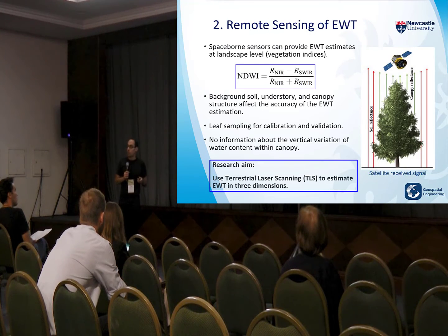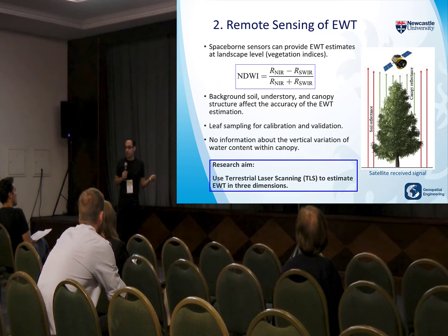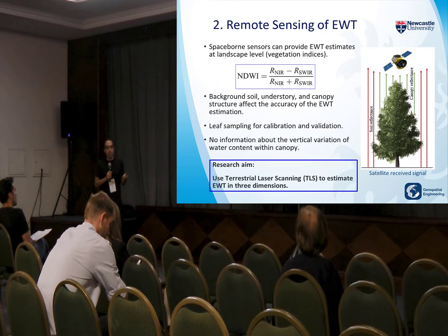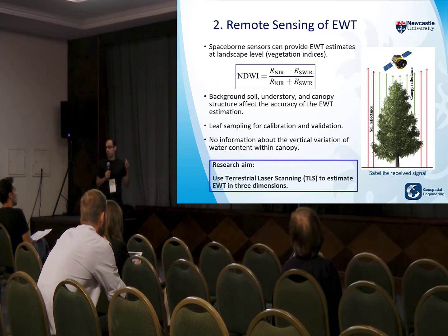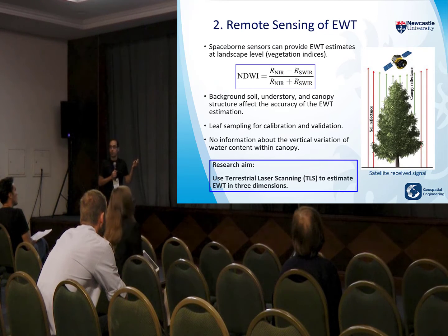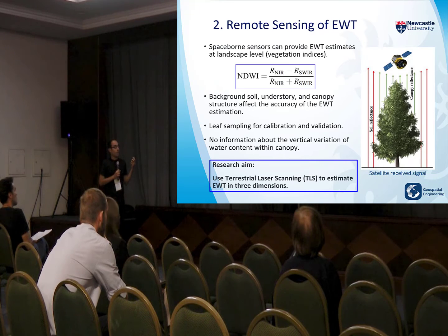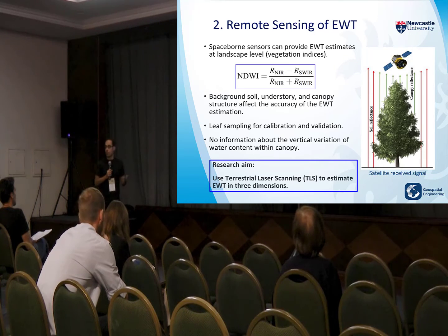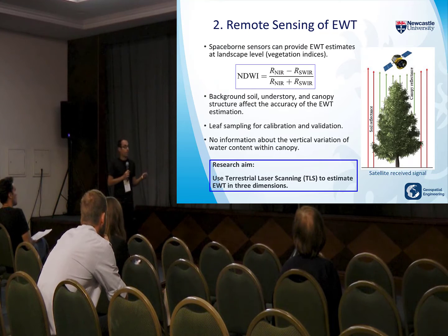Basically, we use spaceborne sensor satellites to produce maps of distribution. We combine the reflectance from near infrared and shortwave infrared wavelengths in vegetation indices such as NDWI, or the Normalized Difference Water Index, and then use this vegetation index to produce maps of water content distribution.